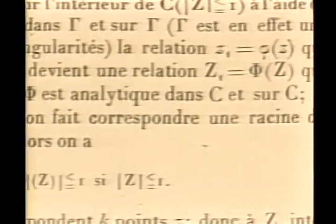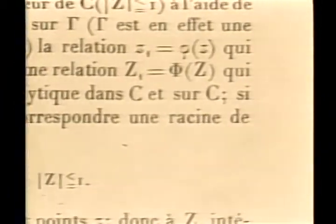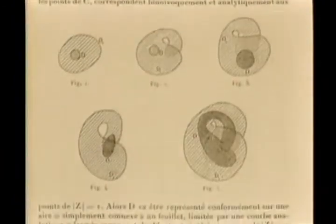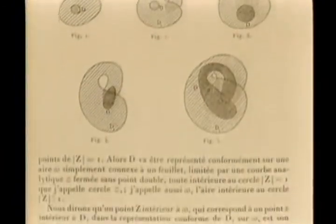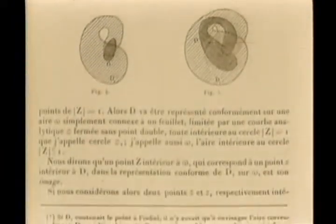Although Julia himself never saw a Julia set — he could only guess at them — it wouldn't be until the advent of modern computers that Julia sets could be seen for the first time. For me, the first step, or most difficult mathematical problem, was to program it and see how it looked.